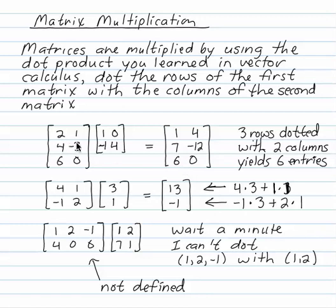So the matrix multiplication tells you where to put the answers. Here's a 2 by 1 times a 2 by 2 times a 2 by 1. So 4 times 3 plus 1 times 1 is 13. And negative 1 times 3 plus 2 times 1 is negative 1.